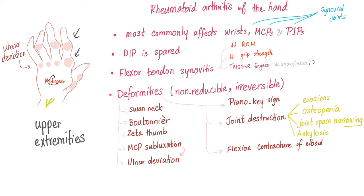Deformities include swan neck, boutonnière, Z-thumb or Z-line deformity, MCP subluxation leading to ulnar deviation. The ulnar deviation is at the level of the MCPs, not the wrist. Some authors argue that at the wrist you'll find radial deviation.